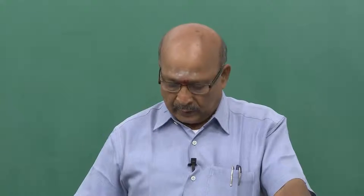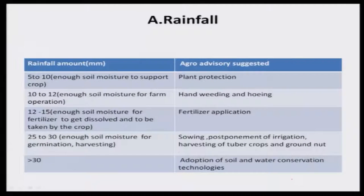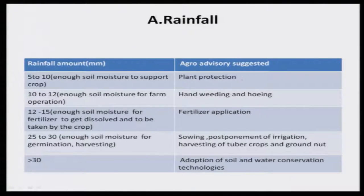The first thumb rule is for rainfall. If you get 5 to 10 millimeters of rainfall, there is enough soil moisture to support your crop. You measure this through a rain gauge. When this is the case, you go for plant protection, as some amount of soil moisture is required for that operation.